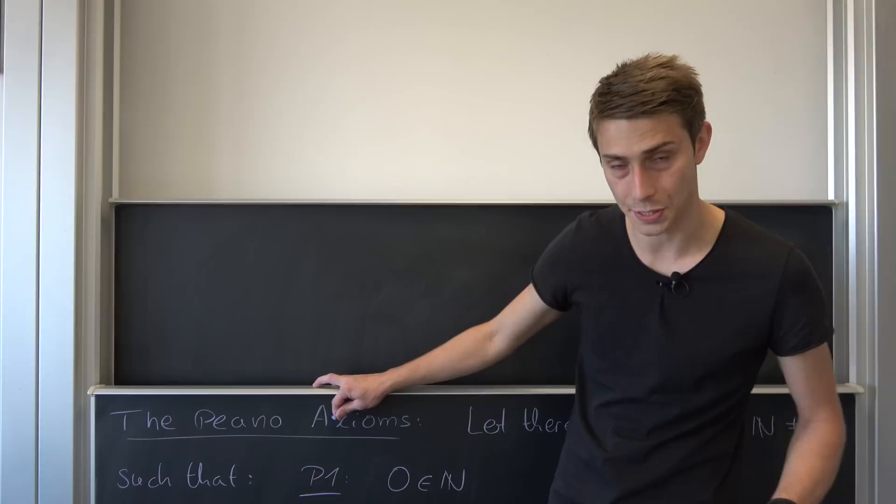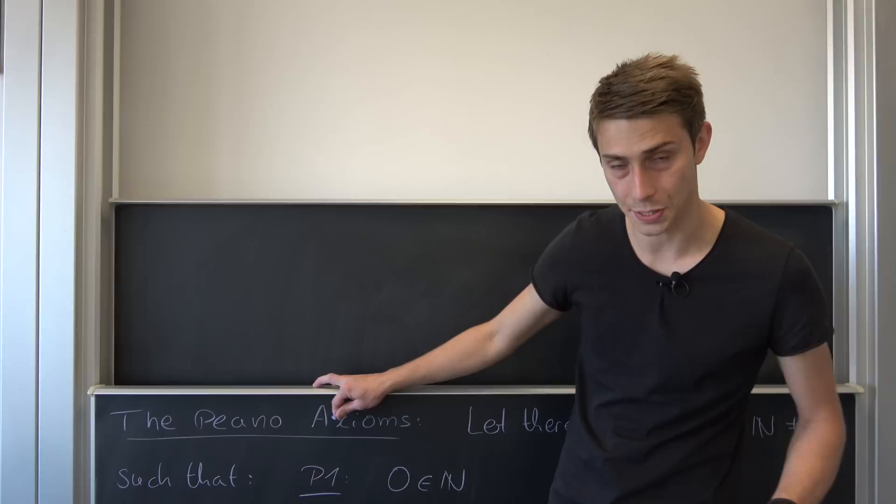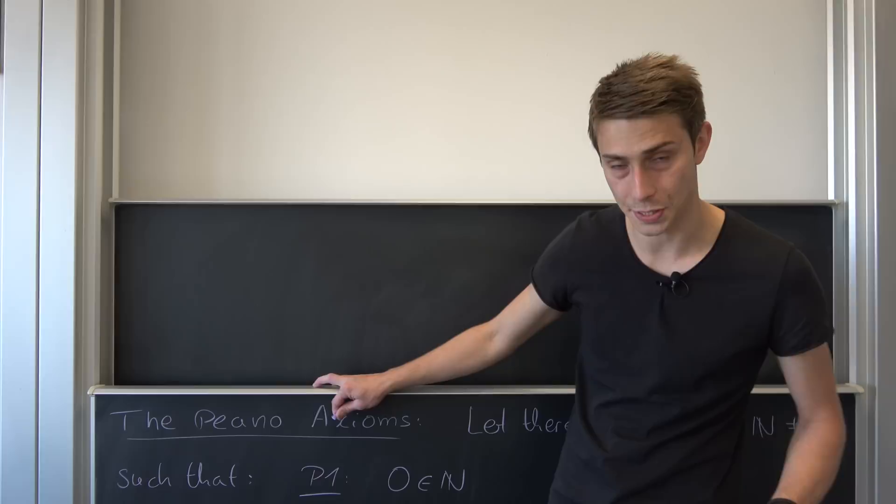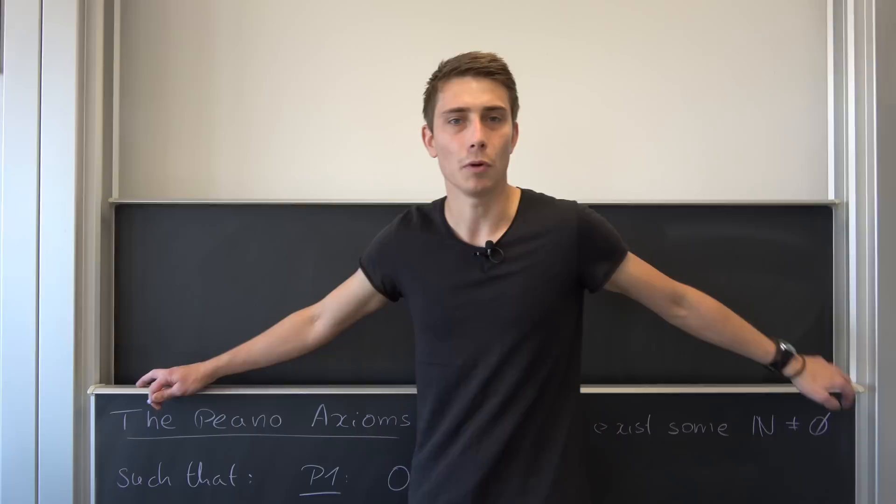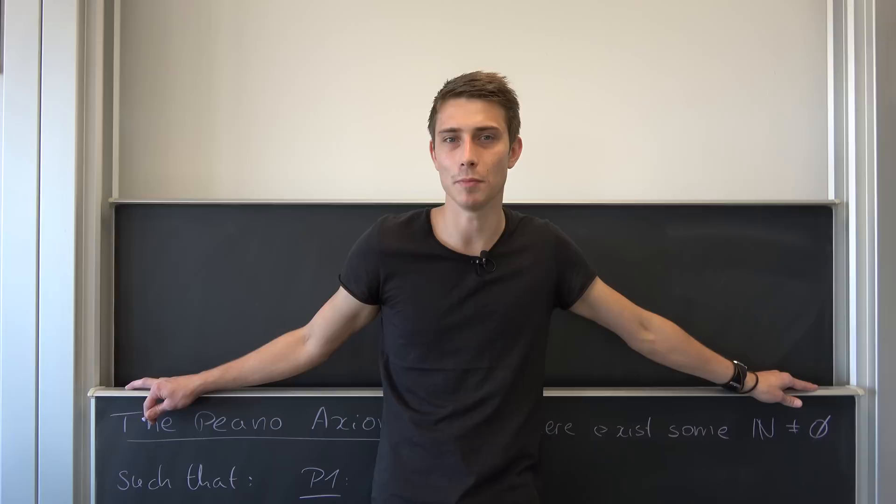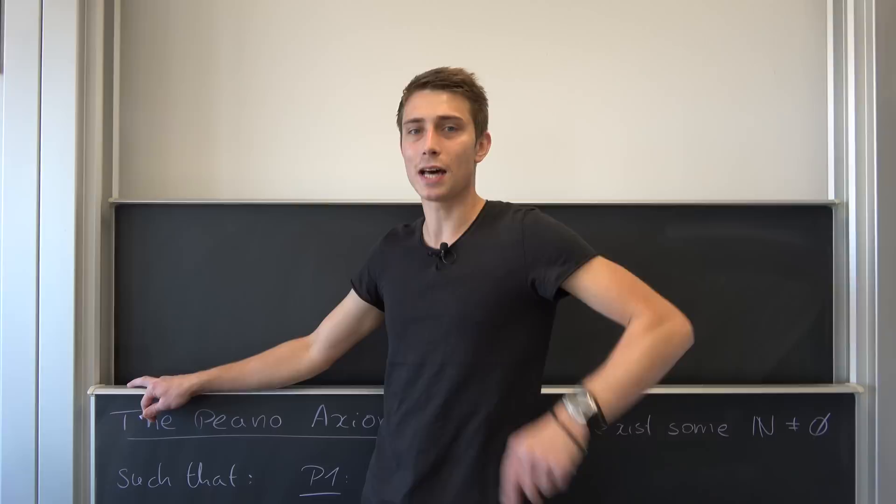So this was just a quick little introduction to the Peano axioms, and with those and two little operations on the natural numbers, we can prove a lot of stuff, basically everything regarding operations on natural numbers. But what are those two little things we want to talk about? Well, people like to call them times and plus.